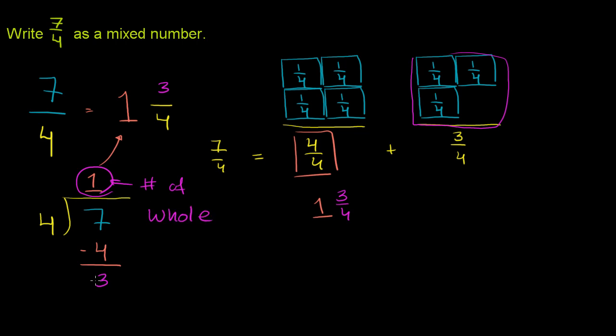And then how many pieces do we have left over? Well, we have 3 pieces, and each piece is a fourth, so we have 3 fourths left over. So we have 1 whole pie and 3 pieces, which are each a fourth, left over.